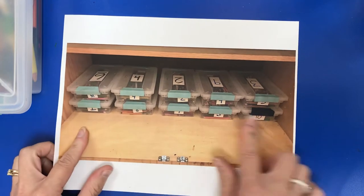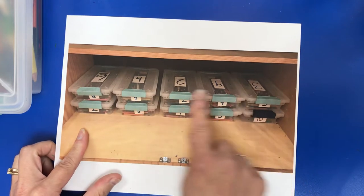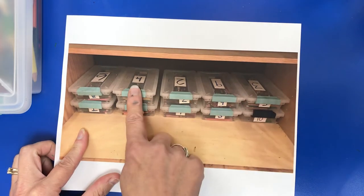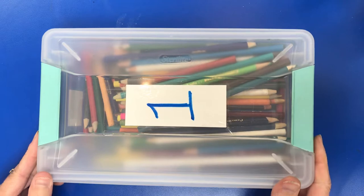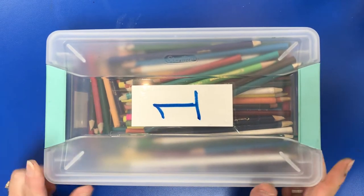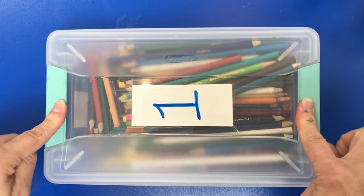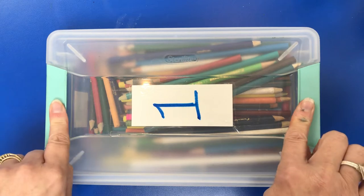When you choose your pencil bin, you're choosing by your table number. Here is table number one. When you are getting your bin, these should be latched and they stay latched until you get to your table.